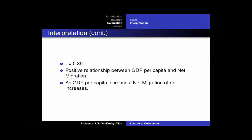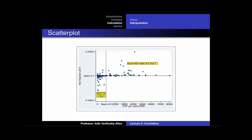Using these criteria to interpret our correlation coefficient of 0.39, that would suggest there is a positive relationship between the GDP per capita and net migration of a country. As GDP per capita increases, net migration often increases. Generally speaking, when an individual observation's GDP per capita is above its mean, net migration is also above the mean, and when GDP per capita is below the mean, net migration is also below the mean. However, the fact that it is only a positive relationship and not strongly positive means that some observations do not follow this pattern.